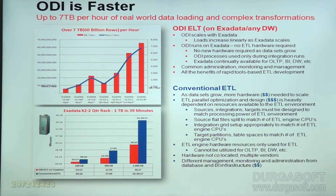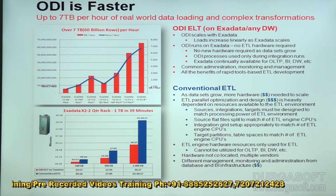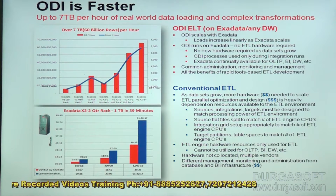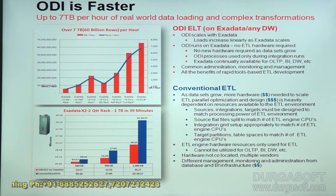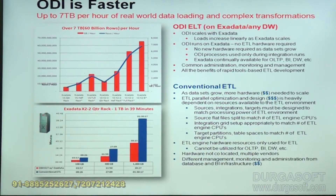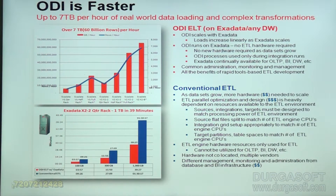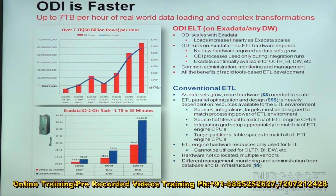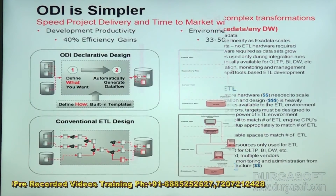With conventional ETL, as data sets grow, more hardware is needed to scale. ETL parallel optimization is heavily dependent on the available resources of the ETL environment. Sources and integration targets must be designed to match the processing power of the ETL environment. Source flat files must be split to match the number of ETL engine CPUs, and target partitions and table spaces must also match ETL engine CPUs. ETL engine hardware resources can only be used for ETL — they cannot be utilized for OLTP, BI, or data warehouse workloads — and hardware is not co-located, requiring multiple vendors with different management, monitoring, and administration from database and BI infrastructures.